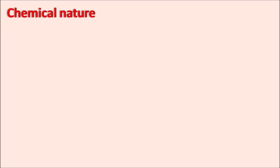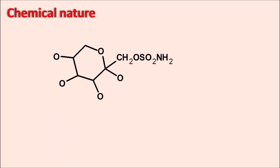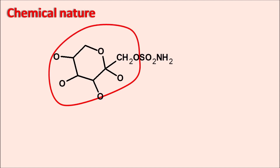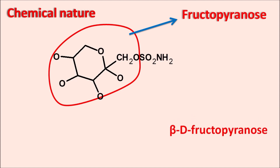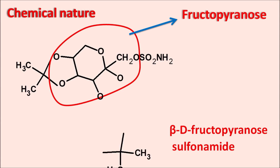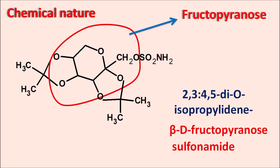Now let us see the chemical nature of this drug. This is the basic ring system present in topiramate — a six-membered ring system with several hydroxyl groups. This is nothing but a fructopyranose ring system, with beta configuration, so we can write this as beta-D-fructopyranose, which is attached with a sulfonamide. At the second and third position, as well as fourth and fifth position, this ring is closed by an isopropyl group. Since it is attached by the same carbon, it is called isopropylidene, written as O-isopropylidene. That is the complete name of topiramate.